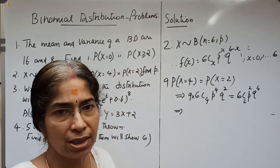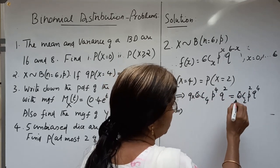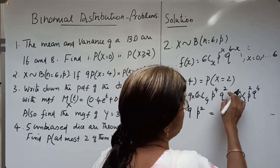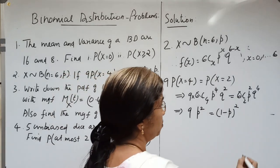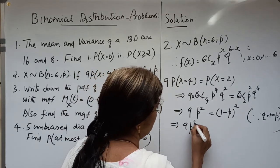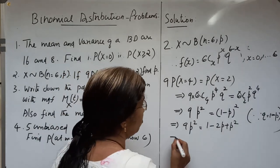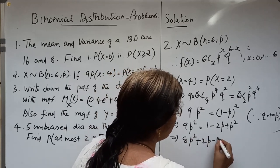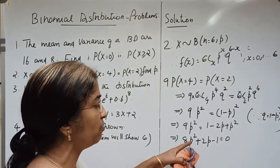Since 6C4 equals 6C2, those terms cancel. Canceling common powers of P and Q, we get 9P^2 equal to Q^2 equal to (1-P)^2. Expanding: 9P^2 equals 1 minus 2P plus P^2. Rearranging gives 8P^2 plus 2P minus 1 equal to 0, a quadratic equation in P.